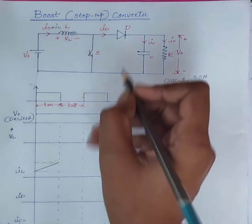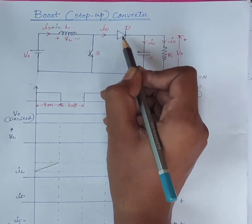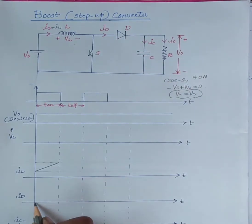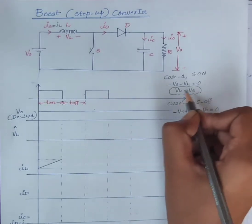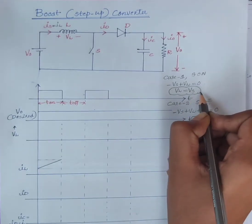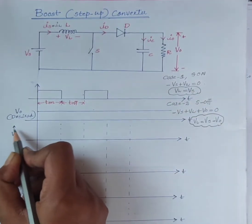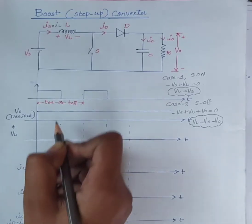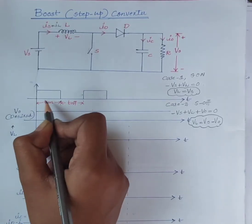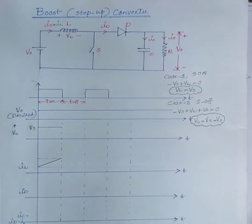Also, the current through the diode, Id, is equal to 0. So, when the switch is on, Vl is equal to Vs. Therefore, the inductor voltage Vl is equal to Vs during the time T on.